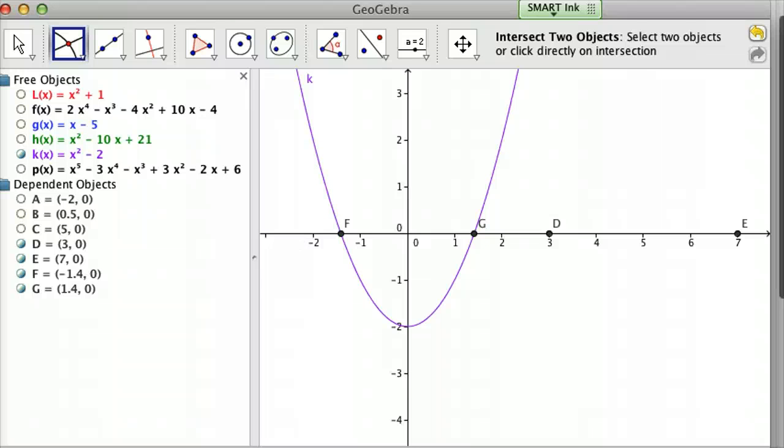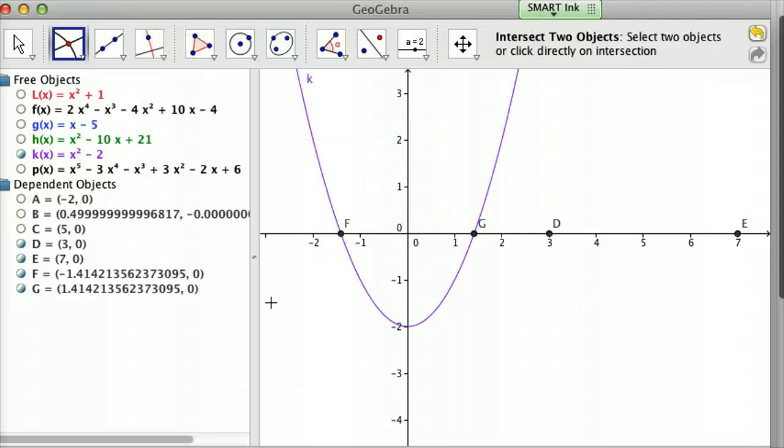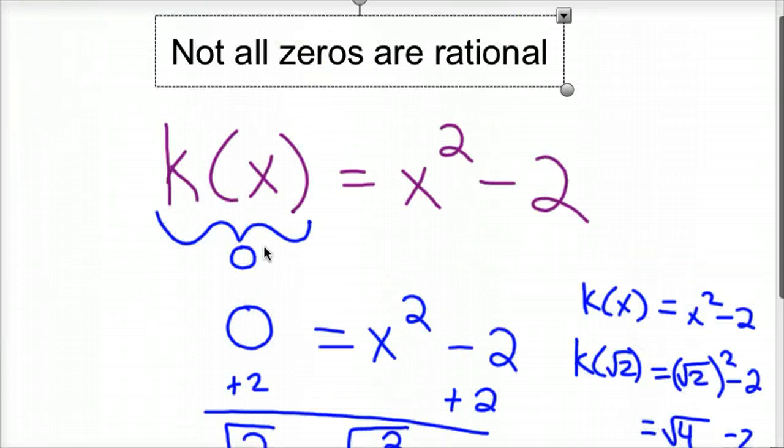In GeoGebra, I'm going to change the rounding. I'll change the rounding to like 15 decimal places. Not that that proves irrationality, but kind of like any calculator, there you have it. So -1.41421... that's the square root of 2, and negative square root of 2 and positive square root of 2 are your two x-intercepts. You could have irrational numbers, which would be very hard to guess and check.